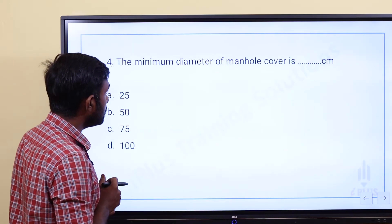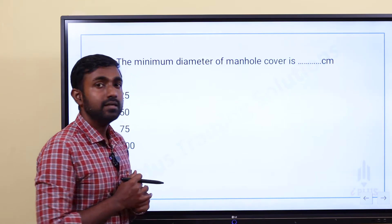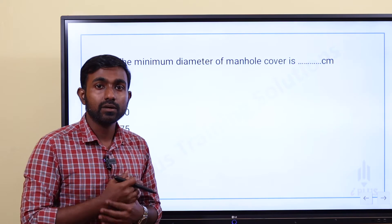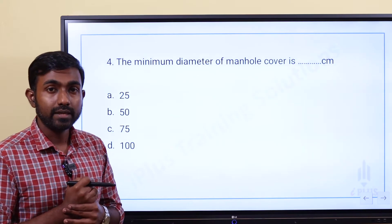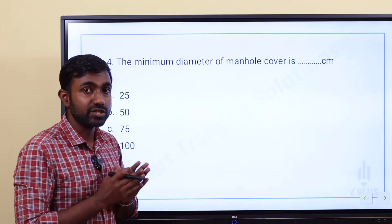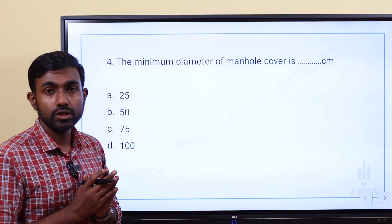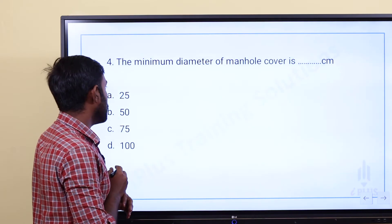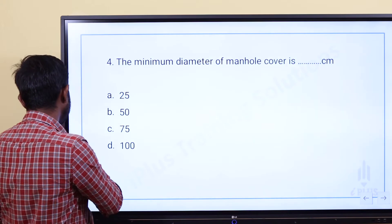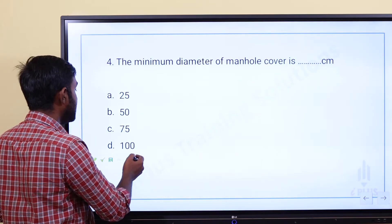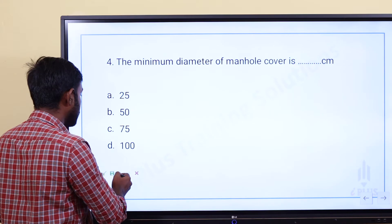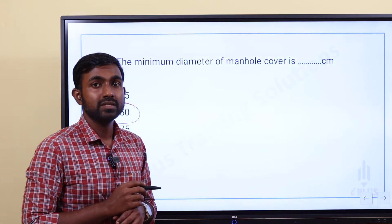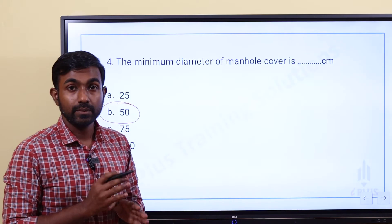The minimum diameter of a manhole cover is — Option A: 25 cm, Option B: 50 cm, Option C: 75 cm, Option D: 100 cm. The answer is 50 centimeters. The minimum diameter of a manhole cover is 50 cm to allow periodic maintenance access.